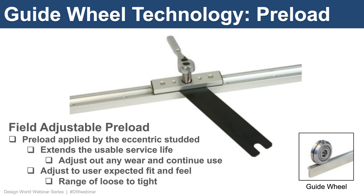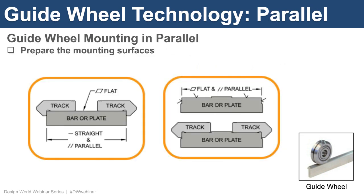This field-adjustable preload is a very unique feature compared to other linear guide types. The preload can be applied by the eccentric stud to extend the usable service life, essentially adjusting out any wear that occurs during continued use. You can also adjust to the user's expected fit and feel for a range from loose to tight fit on the linear guide. With guide wheels mounted in parallel, it's important to prepare the mounting surfaces of the mounting structure. For custom designs and installations, the substrate should be prepared with machining, though you can apply the track directly to unmachined plate or bar stock.